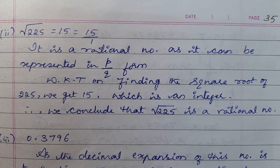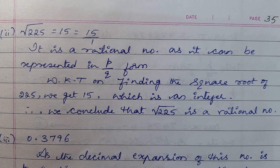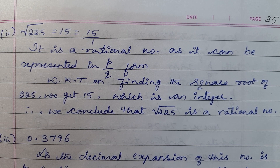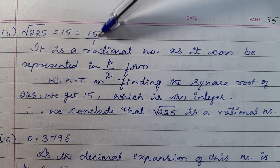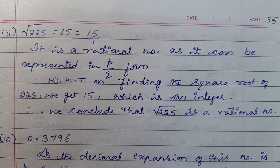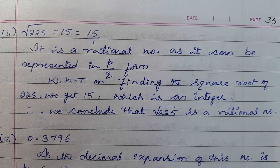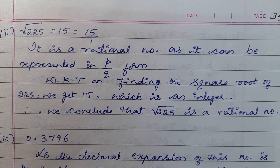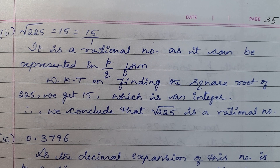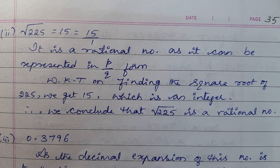Next, the second one: square root of 225. Square root of 225 is 15. It is a rational number as it can be represented in P/Q form. We know that on finding the square root of 225, we get 15, which is an integer. Therefore, we conclude that square root of 225 is a rational number.